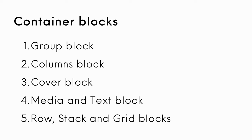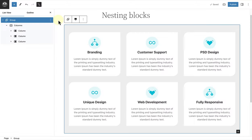As a reminder, we use container blocks such as the group block, columns block, cover block, media and text block, as well as row, stack, and grid blocks to nest blocks together. A container block serves as a container or wrapper for other blocks, allowing you to group related content and apply styles or settings to the entire group.